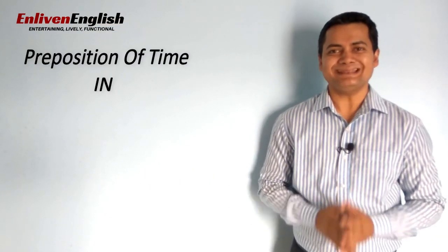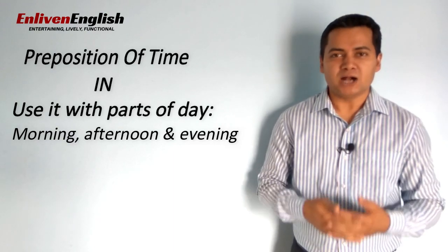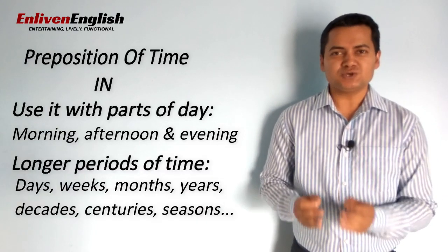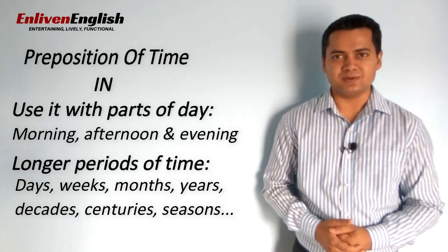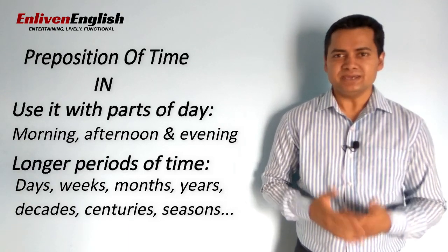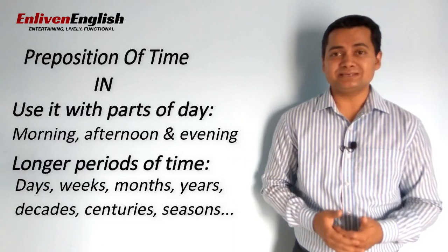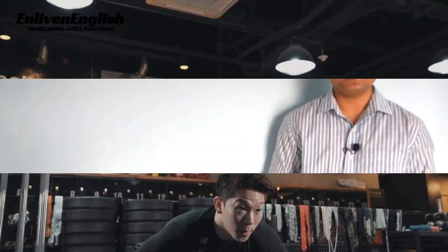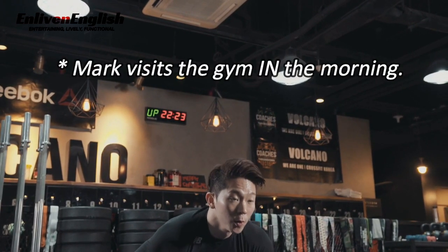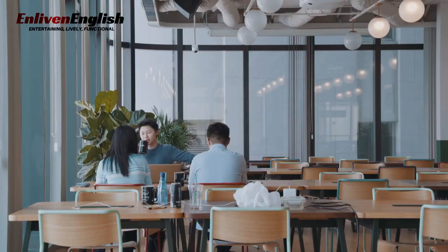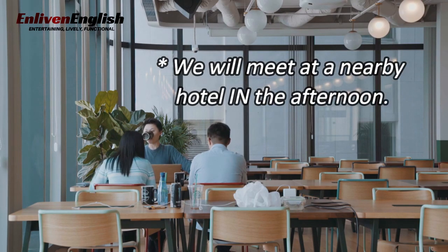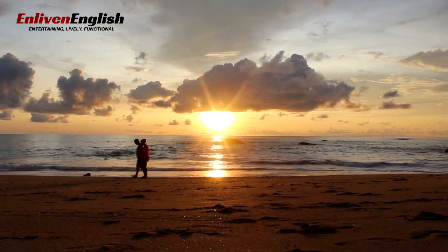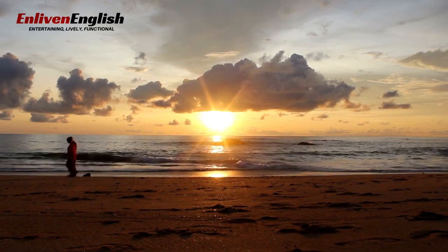Now let's talk about preposition 'in.' We use 'in' with parts of the day, like in the morning, in the afternoon, in the evening, and so on. We also use 'in' with longer periods of time like days, weeks, months, years, decades, centuries, and seasons. For example: Mark visits the gym in the morning. We will meet at a nearby hotel in the afternoon. We regularly go for a walk on the beach in the evening. In all three sentences, we are talking about a part of the day.